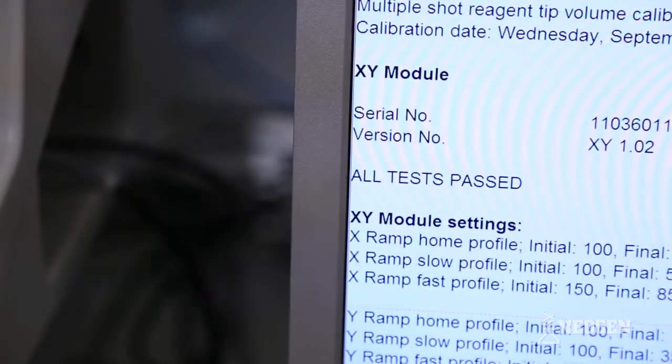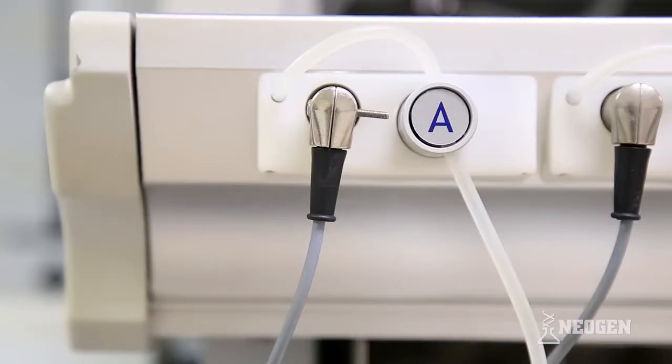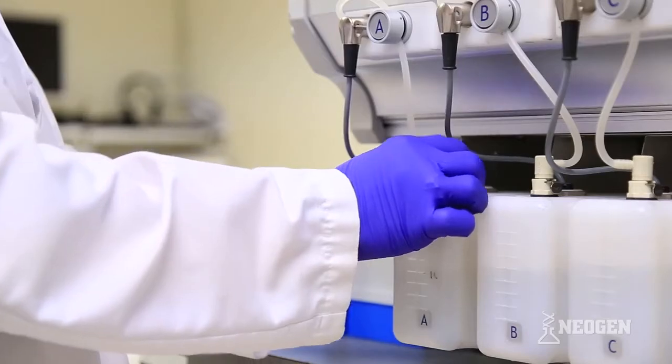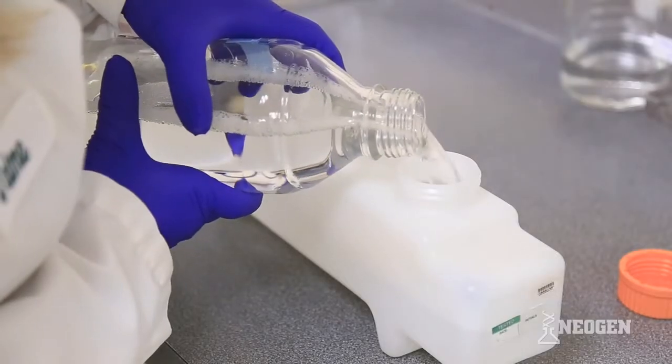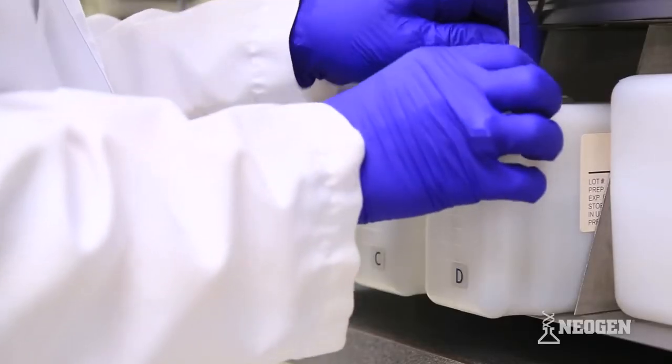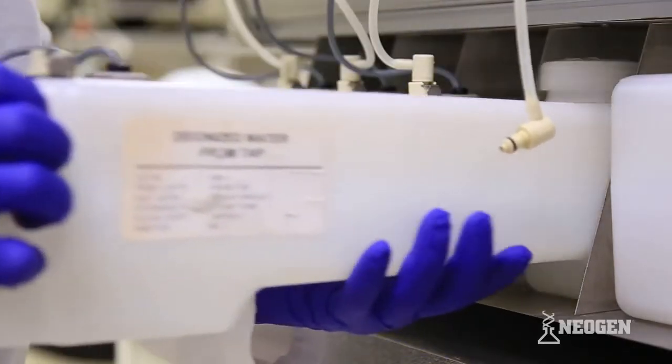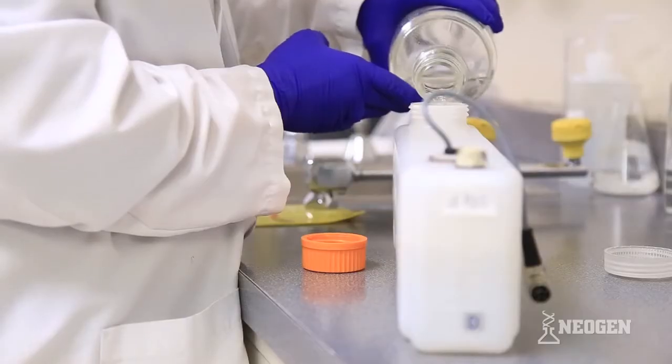If all tests pass, the instrument is ready. Wash bottle A will need to be checked for adequate amounts of wash buffer and if needed, diluted wash buffer will need to be added. Wash bottle D will need to be checked for adequate amounts of DI water and if needed, DI water will need to be added.